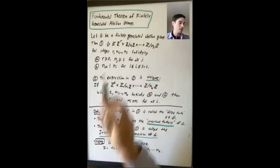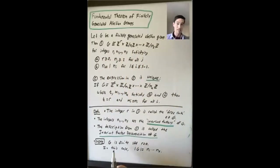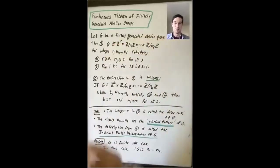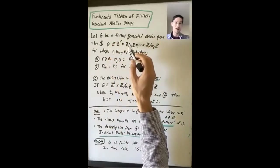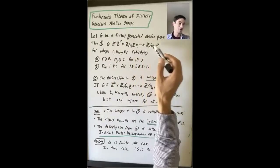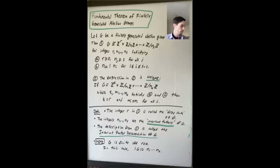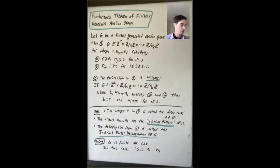There's some information you can read off from G immediately just from looking at this direct product. For example, G is finite if and only if R equals zero. If R is positive, then Z^R is infinite, so G would have to be infinite. But if R equals zero, the size of G is the size of Z mod N1Z cross ... cross Z mod NSZ, which is just the product N1 × N2 × ... × NS.